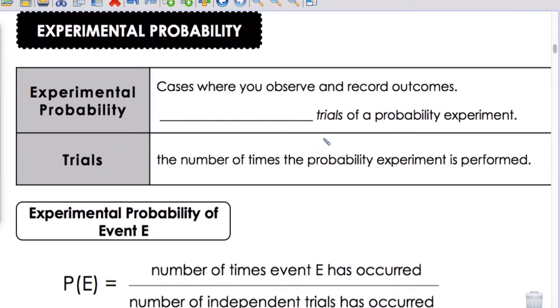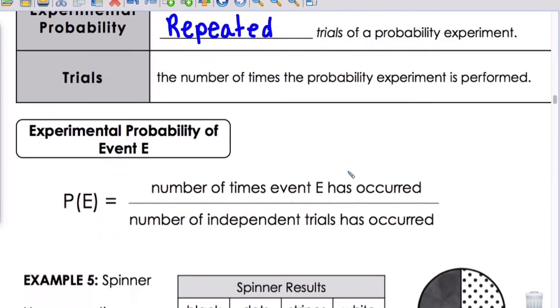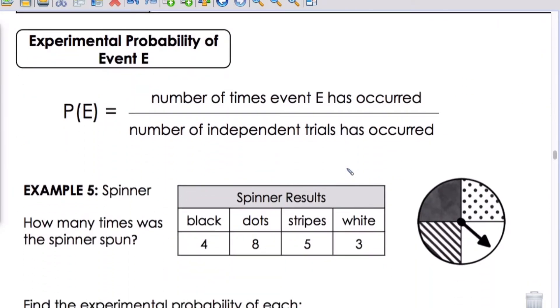Experimental probability. Experimental probability, cases where you observe and record outcomes from repeated trials of a probability experiment. Trials are the number of times the probability experiment is performed. We have a new formula for this: the number of times event E has occurred divided by the number of independent trials that have occurred.